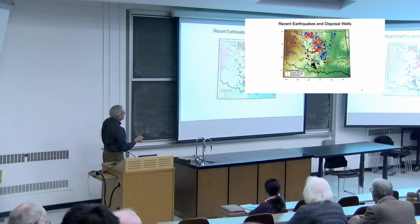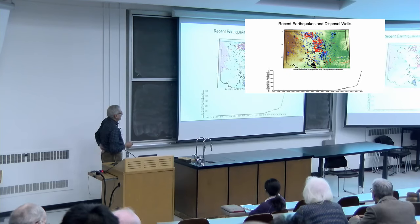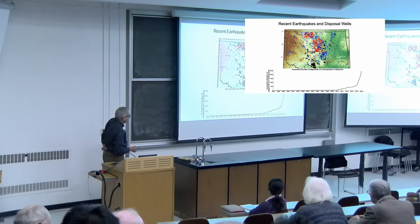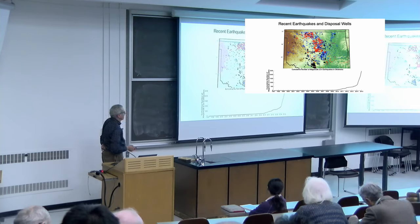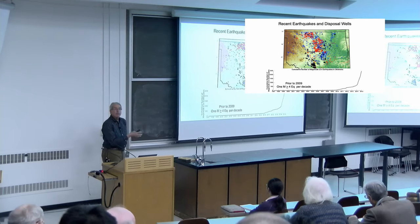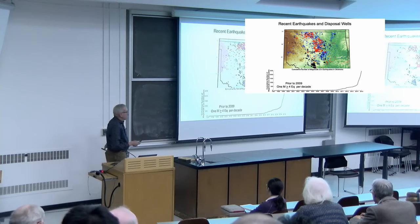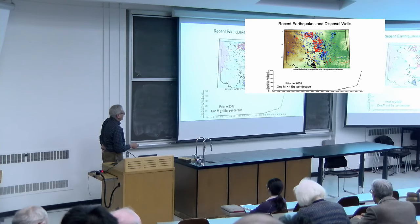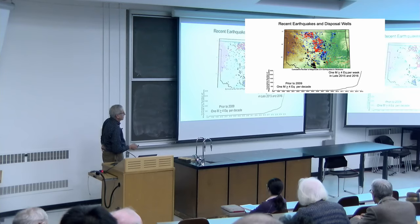What was curious was we'd never seen such a huge area — over 100 kilometers — light up all at once with many different potential sources. If you look at magnitude 2.5 and above earthquakes, until about 2009 there was little change, then things started to take off. To give you a sense: prior to 2009, there was one magnitude 4 earthquake per decade in north-central Oklahoma; between 2015 and 2016, at its peak, there was one every week.